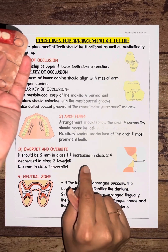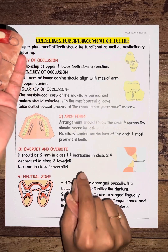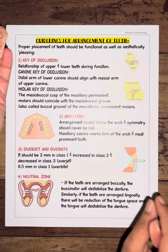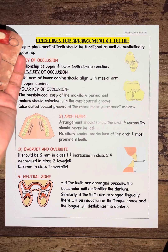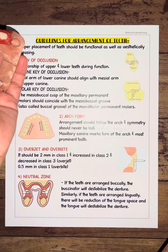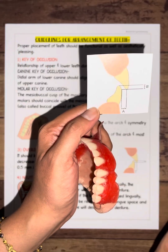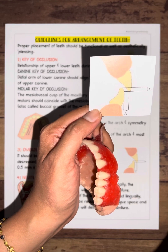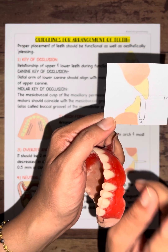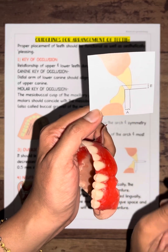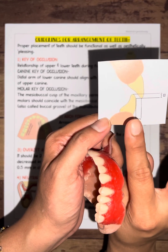When arranging teeth, if the patient naturally has a class two or class three jaw relationship, you need to arrange the teeth accordingly — you cannot change the class. The overjet should be approximately 2mm, and the overbite should be 0.5mm in normal cases.